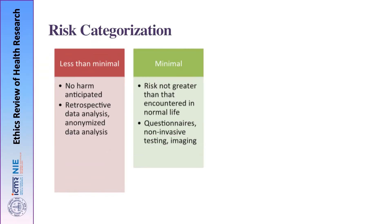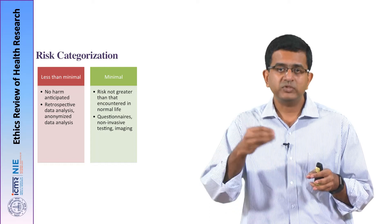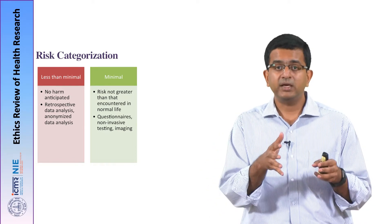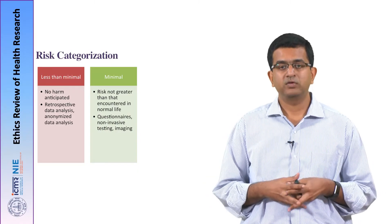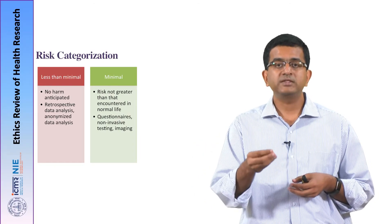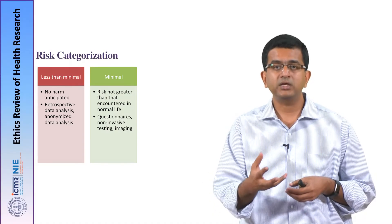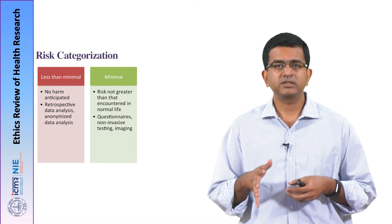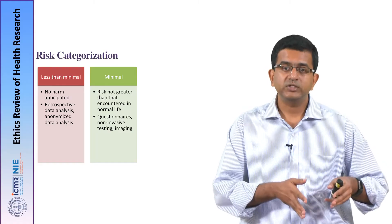Then you have the category of minimal risks. These are research projects where the risk is not greater than what is encountered in normal life. A healthy human being living a normal life has certain risks inherent in their lives, and this category covers research projects involving only that minimal risk. Examples include questionnaire-based research projects, household surveys, non-invasive testing like urine or hair sampling, and imaging studies like X-rays or ultrasound scans. All these contain minimal risks and are categorized as research projects with minimal risks.